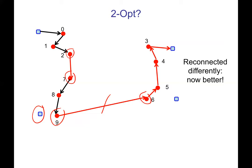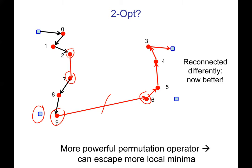With a more powerful perturbation operator, you can get out of local minima better. But this is a balancing act: if your perturbation operator is very slow, you might not be able to try very many perturbations. Also, if it just changes everything, it turns back into multi-start — it just destroyed the entire previous solution. You probably don't want your perturbation operator to be that destructive, but there's a wide space to explore in between those extremes.